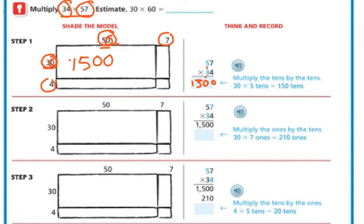And then in my next one, so this is 1,500. I've already got that one. And the next one, I'm going to do the 7 ones times the 3 tens. So 30 times 7. Well, 7 times 3 is 21. And then I have my 1 zero, because it's tens that we're multiplying by. So it's 210.